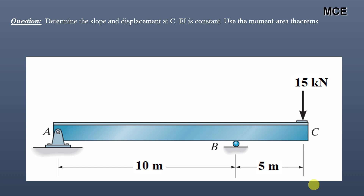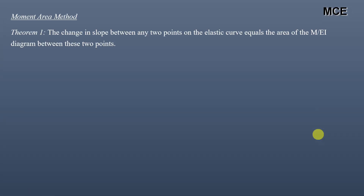Hello and welcome back to Master Civil Engineering. In this video you will learn how to find the slope and deflection of a beam using the moment-area method, also called Mohr's method. The given question asks us to determine the slope and displacement at point C for an overhang beam of span 15 meters with a pin support at A, a roller support at B, and a concentrated load of 15 kilonewtons applied at point C.